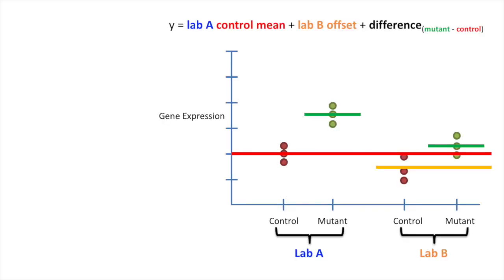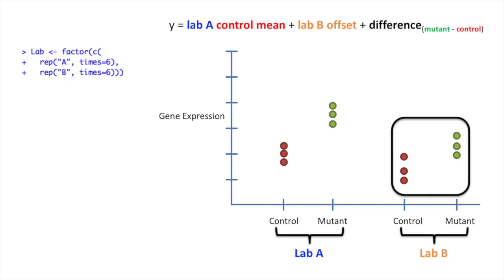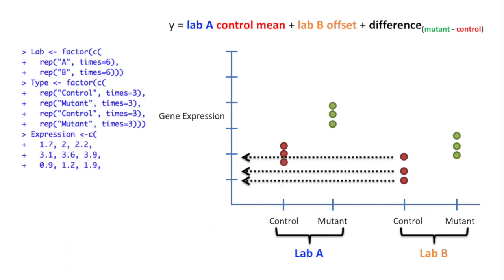In this second example, we compared experiments done by two different labs. There was a batch effect and we wanted to control for that. In R, we start by creating the labels for the data that was generated by lab A. Then we create the labels for the control data from lab A and the mutant data from lab A. Then we create the labels for the control data from lab B and the mutant data from lab B. Then we enter in all of the expression values.